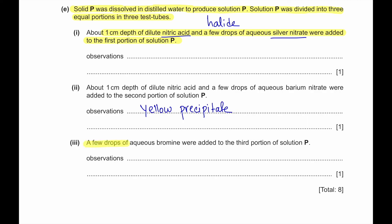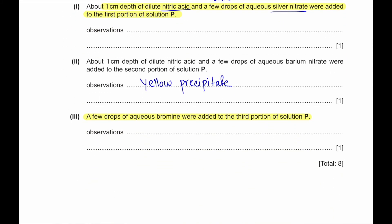Part 3: a few drops of aqueous bromine were added to the third portion of solution P. Iodide in potassium iodide has an oxidation state of −1 and can lose its electron to form iodine. Bromine is more reactive, so it will displace iodine, forming potassium bromide and releasing iodine into the aqueous solution. The observation will be the solution turning orange or brown.